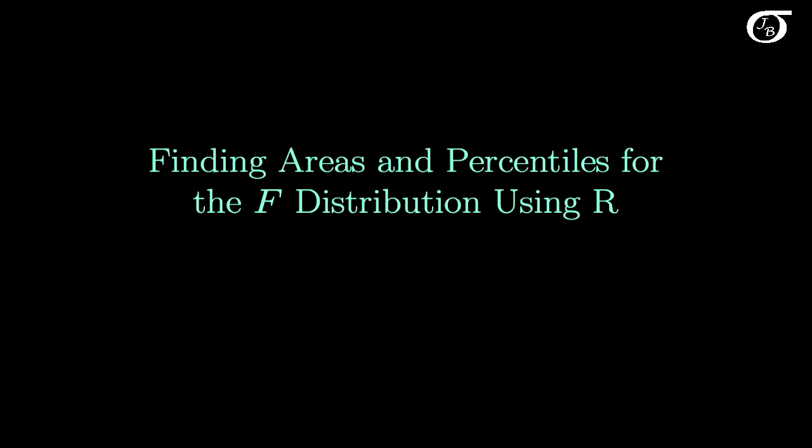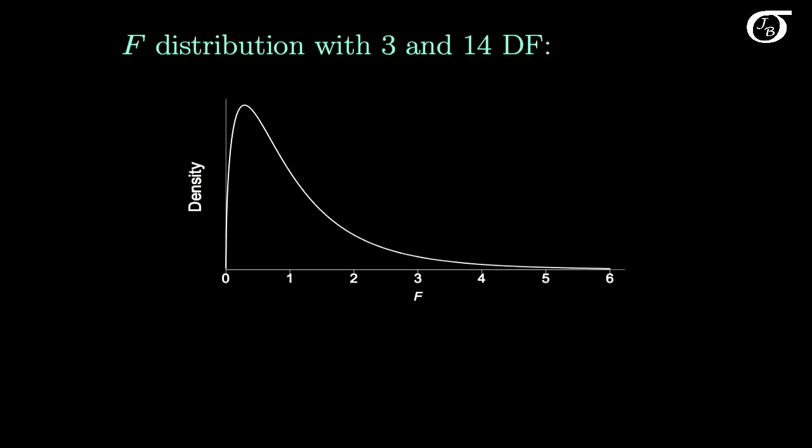Let's take a quick look at finding areas and percentiles for the F distribution using the statistical computing package R. Let's jump right to an example here. Here I have plotted an F distribution with 3 degrees of freedom in the numerator and 14 degrees of freedom in the denominator.